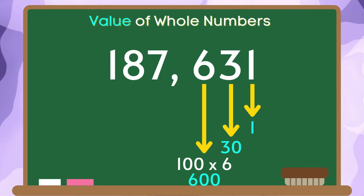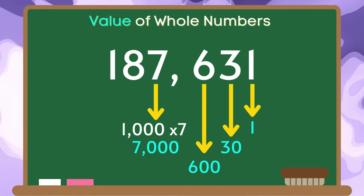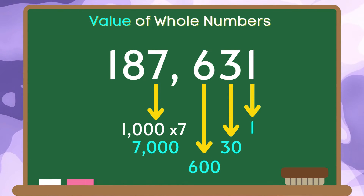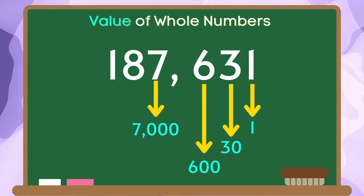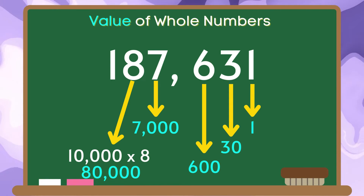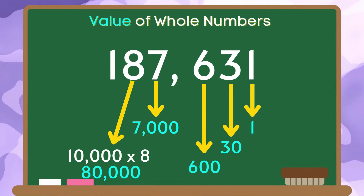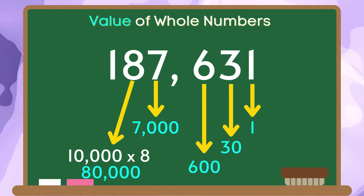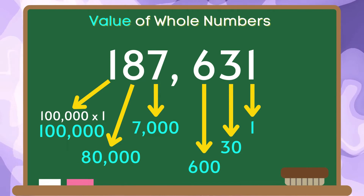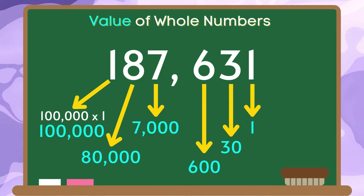The place value of 7 in this number is thousands. We are going to multiply 7 by 1,000, and the product is 7,000. Therefore, the value of 7 in this number is 7,000. The place value of the digit 8 in this number is ten thousands. We are going to multiply 8 by 10,000, and the product is 80,000. Therefore, the value of 8 in this number is 80,000. The last digit is 1. The place value of this digit is hundred thousands. We multiply 1 by 100,000, and the product is 100,000. The value of 1 in this number is 100,000.